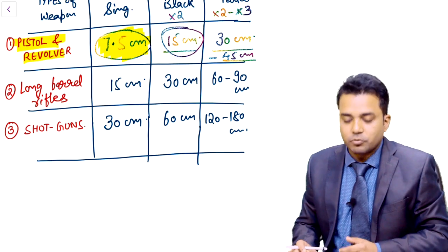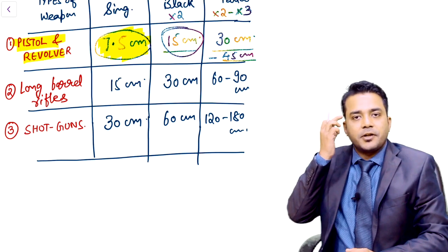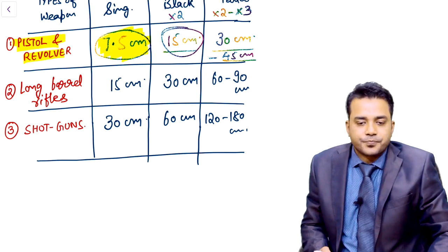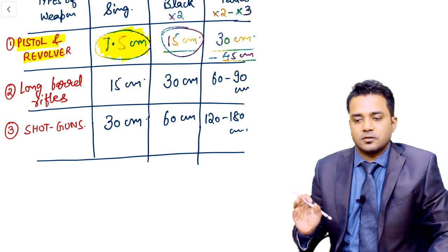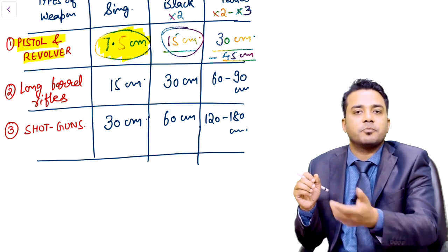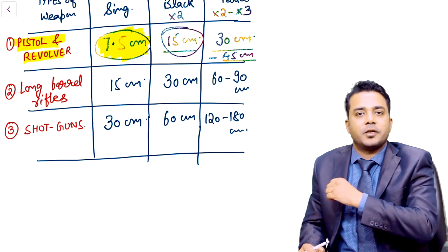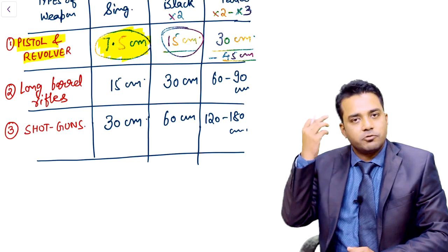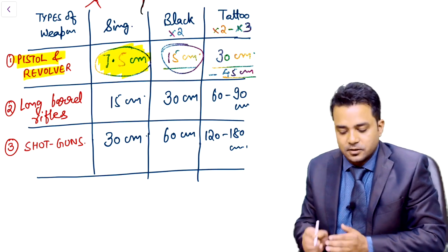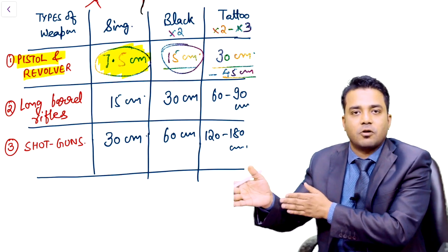A question asked in the AIIMS exam: a 40-year-old lady is lying in a pool of blood with one entry wound over the right temporal region and exit wound over the left temporal region. At autopsy, what will you preserve to know the range of the weapon used? Option A — clothes of the deceased: rule out, no one wears clothes on the temporal region. Option B — blood: how will blood tell the range? The correct answer is Option C — scalp hairs. You preserve scalp hairs to determine if singeing is present, which tells you the distance at which the weapon was fired.